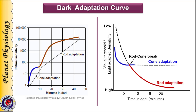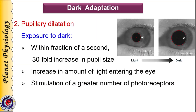Both these graphs represent the same thing — only the Y axis scale differs. In your answer you can draw either curve, but make sure to write the proper Y axis legend. Another mechanism that operates on exposure to darkness is pupillary dilatation. When a person enters a dark area from a bright light area, the size of the pupil increases by about 30 times within a fraction of a second, allowing greater amounts of light to enter the eye and stimulate more photoreceptors, thus increasing visual sensitivity.